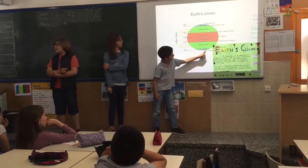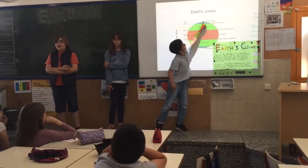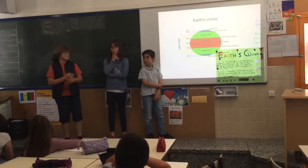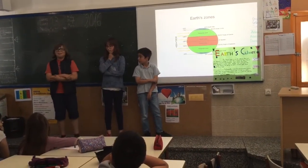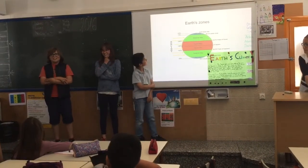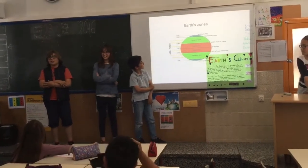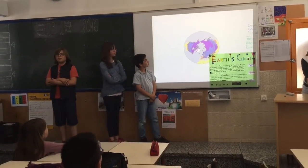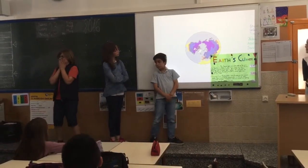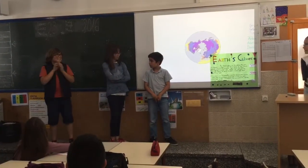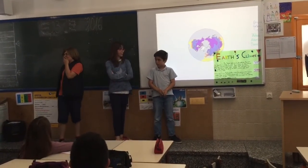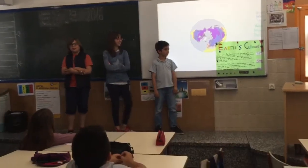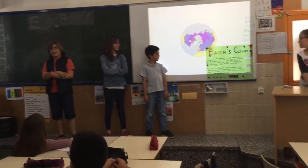The polar zone is a northern and southern region of the earth. The temperature is less than 10 degrees. There are some polar continents, countries and cities, for example, Antarctica, Canada and Alaska.